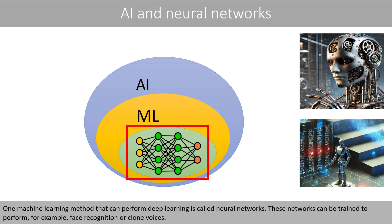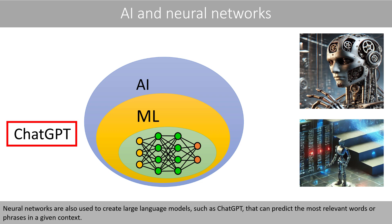One machine learning method that can perform deep learning is called neural networks. These networks can be trained to perform, for example, face recognition or clone voices. Neural networks are also used to create large language models, such as ChatGPT, that can predict the most relevant words or phrases in a given context.